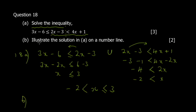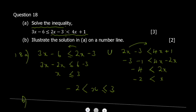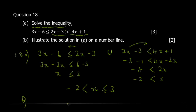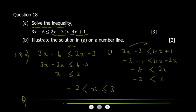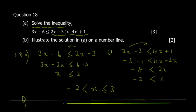The second part says illustrate the solution on a number line. Draw a number line and mark -2 and 3. At -2 it's a strict inequality so you draw a hollow circle — no shading. At 3 it's included so you draw a filled/shaded circle. Shade the region between them.